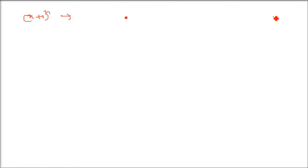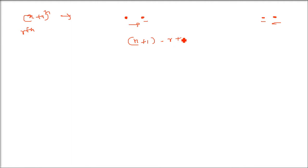In a binomial expansion, recall Pascal's triangle — the first number equals the last, and the second equals the second last. So from front and rear, equal steps give the same coefficients. The rth term from the end corresponds to the (n - r + 2)th term from the front.